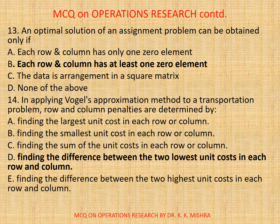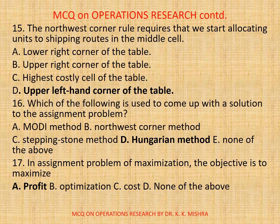Question 13. An optimal solution of an assignment problem can be obtained only if: A. Each row and column has only one zero element. B. Each row and column has at least one zero element. Question 14. In applying Vogel's approximation method to a transportation problem, row and column penalties are determined by finding the difference between the two lowest unit costs in each row and column. Question 15. The north-west corner rule requires that we start allocating units to shipping routes in the upper left corner of the table.